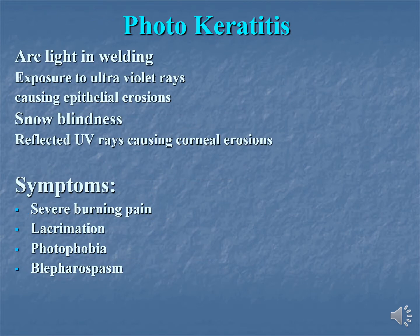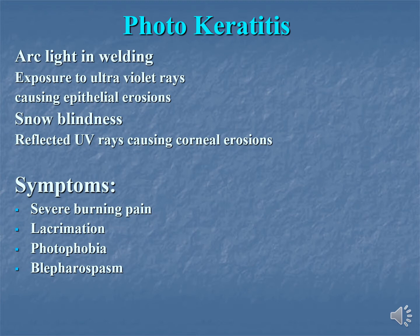Photokeratitis is a condition where ultraviolet rays cause damage to the epithelium and erosions. It is usually due to arc light welding — when an individual looks at arc light welding with the naked eye without protective glasses. It can also occur in snow blindness, where reflected UV rays from snow cause corneal erosions.